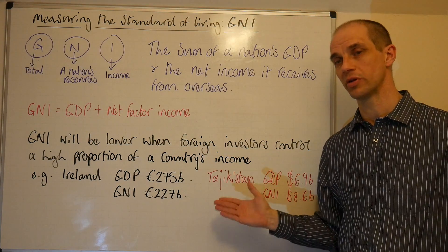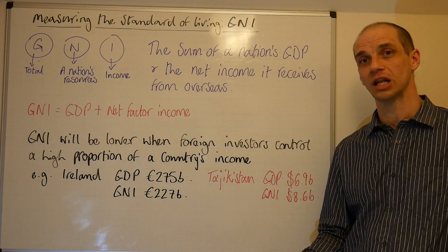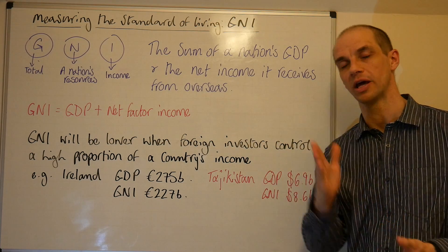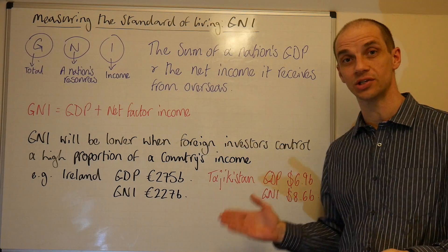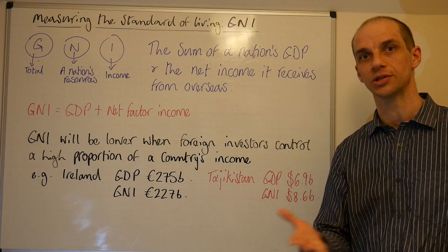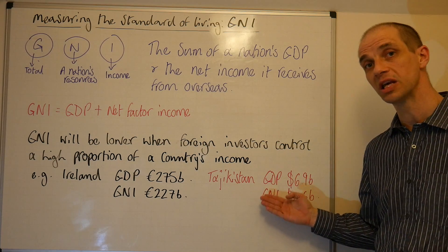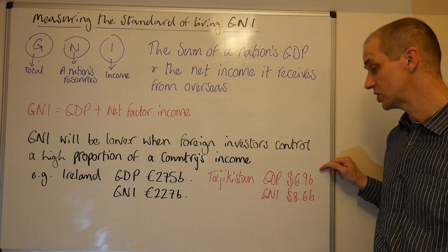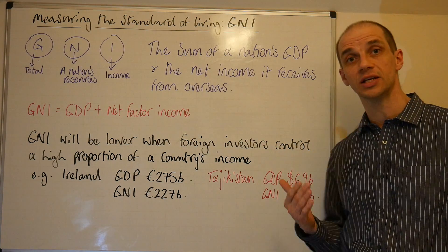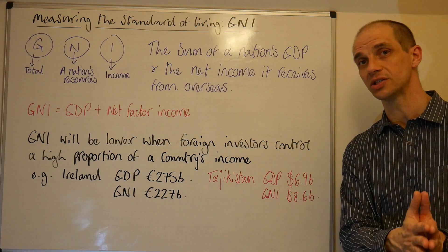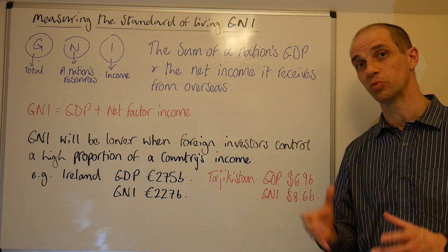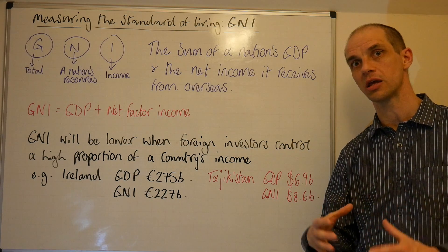If we contrast this with an example such as Tajikistan, which is famed for having the largest number of remittances as a proportion of its economy — Tajikistani workers working in overseas markets send their money back home to family members. Because of that, the GDP figure in 2016 was 6.9 billion dollars, while the actual gross national income was 8.6 billion dollars, because the net factor income was positive. The remittances from labour working overseas bring more income into the economy than would be reflected by GDP alone.